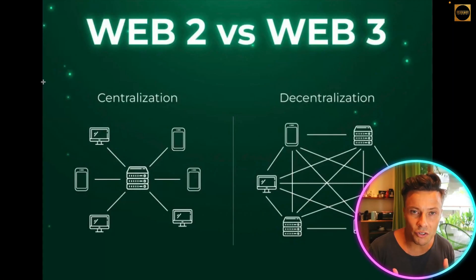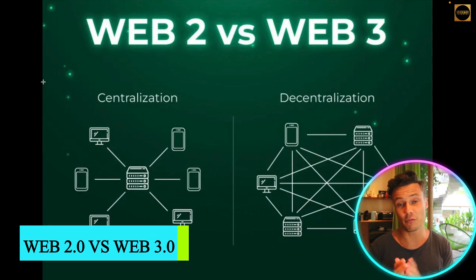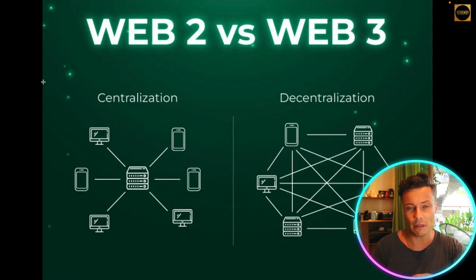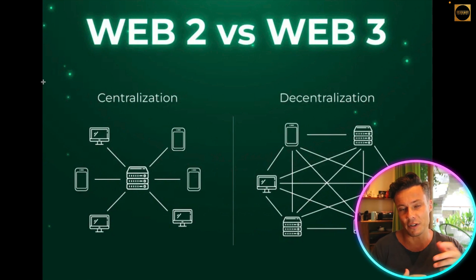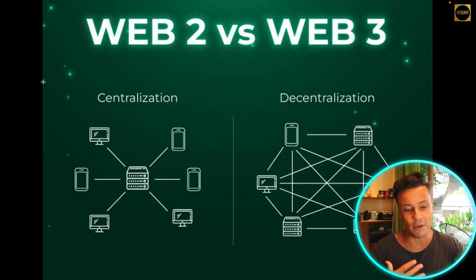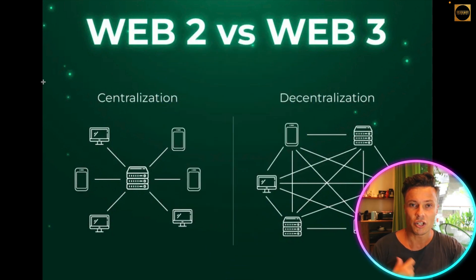So what does Web 2 mean and what is Web 3 and how is it different? Well, Web 1 was basically the original internet where you could go online and maybe you could read a bit of information about different things — different articles, newspapers etc. So pretty much you had no interaction with the internet; all you were doing was using it to find out information.